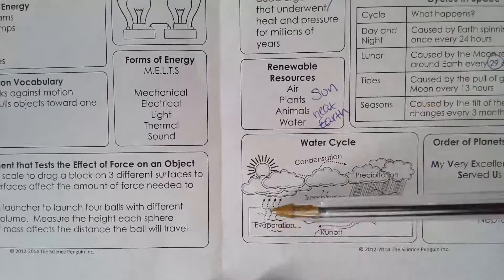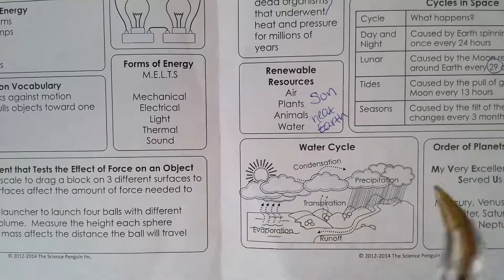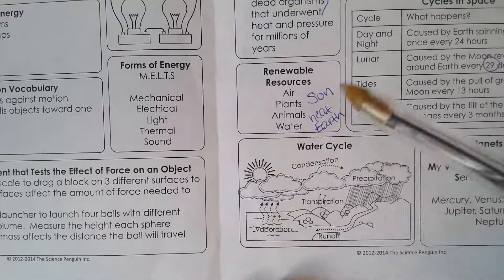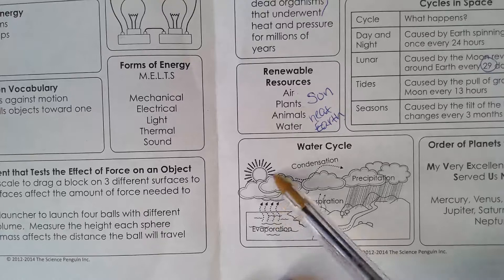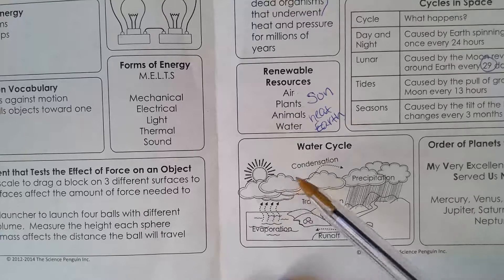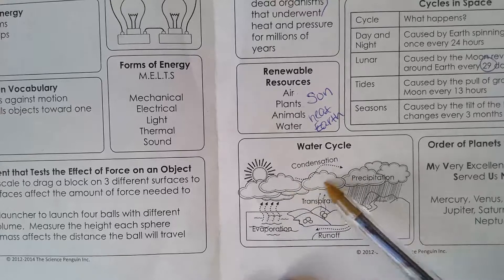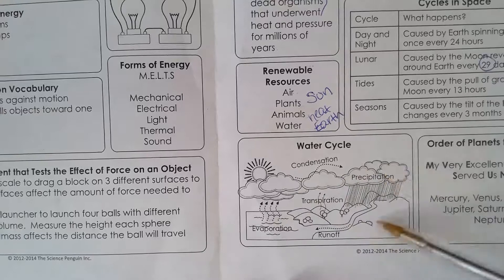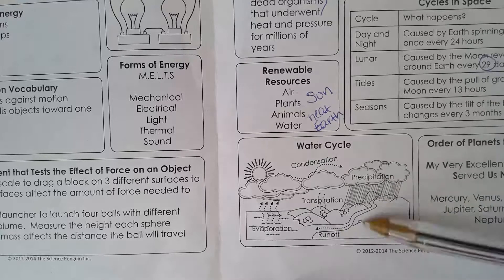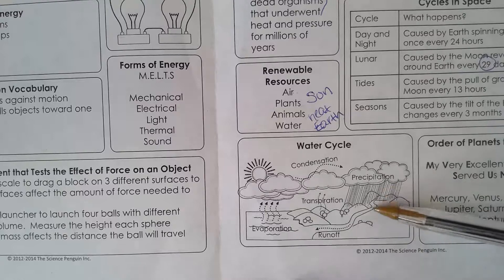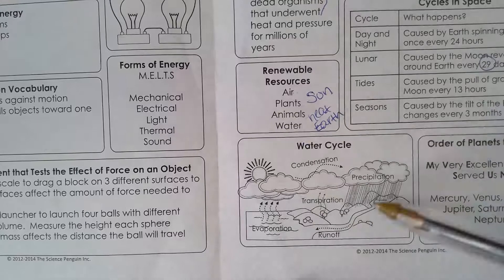Water cycle. Evaporation: ocean water evaporates up into the sky because the sun is heating it up. Then the water vapor hits cooler air up in the sky — the higher you go, the colder it gets — and it forms condensation, turning into clouds. The clouds get so heavy they release all the rain, or it could also be snow, sleet, or hail. When it comes to the ground and there are hills, the water rolls downhill — we call that runoff — and it goes back into the ocean, then back up into the sky. It's a constant cycle.